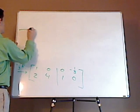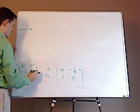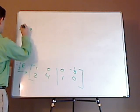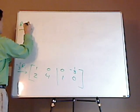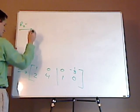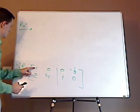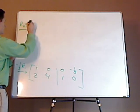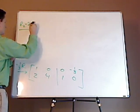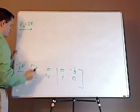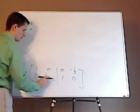I'm going to take row two minus, let's see, what scalar? Two, row one. So I'm only changing this row.